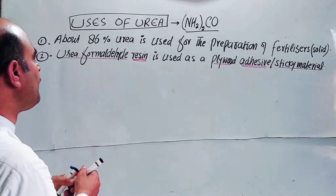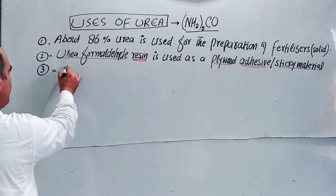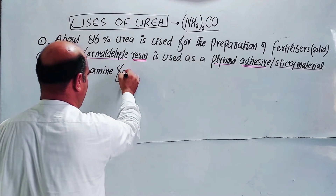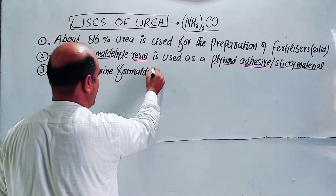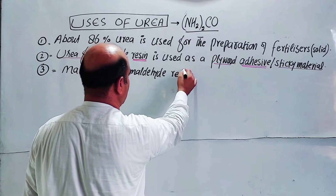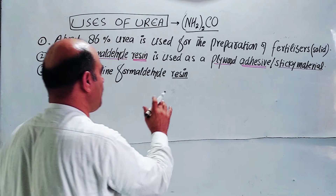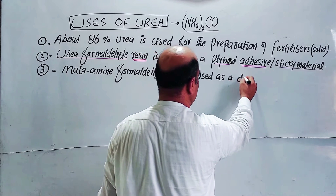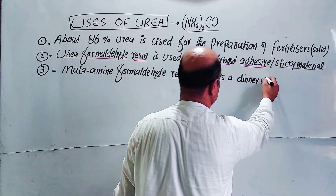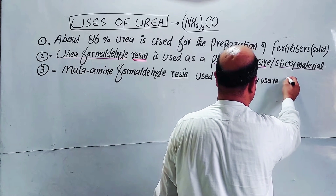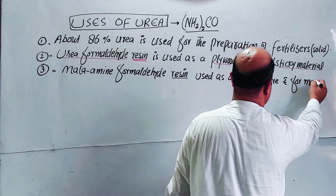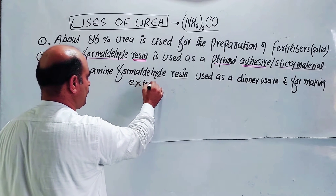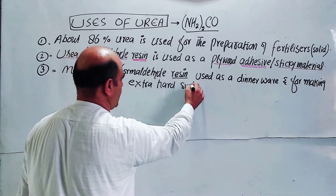Another resin is melamine-formaldehyde resin, made from melamine and formaldehyde. This resin is a sticky material used as dinnerware and for making extra hard surfaces — very hard surfaces.